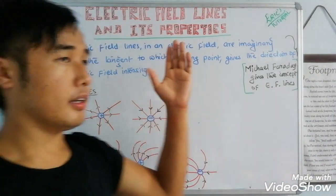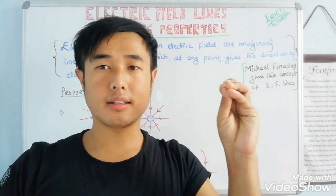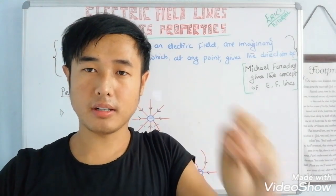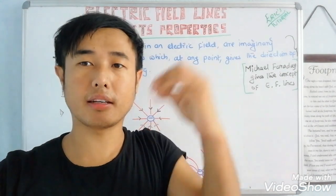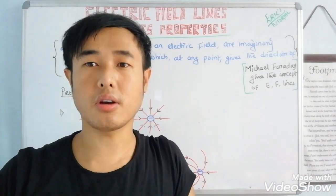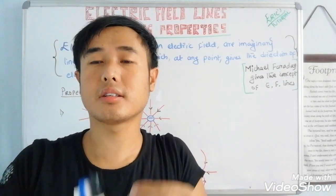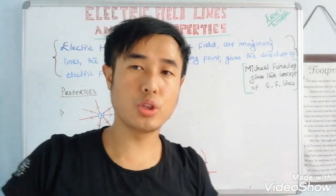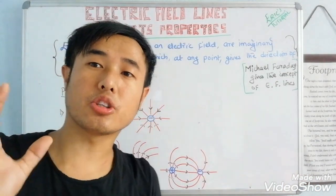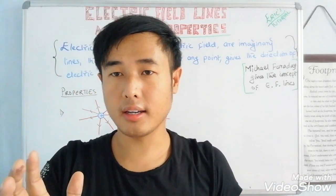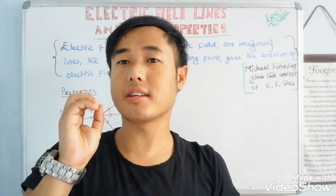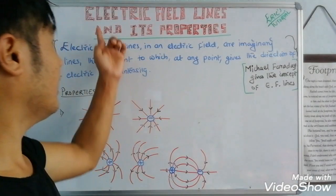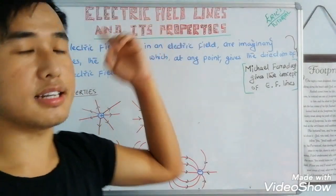When we consider the charged particle, that charged particle will create an electric field in the surrounding. And if the electric field needs to be represented, it will be represented by electric field lines.